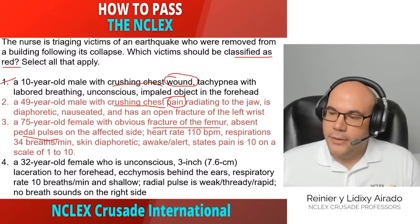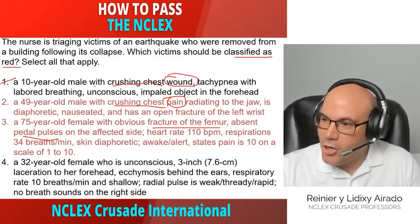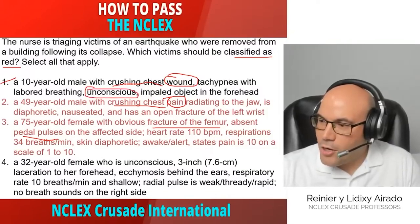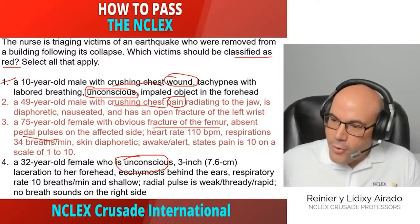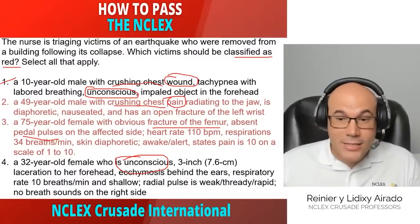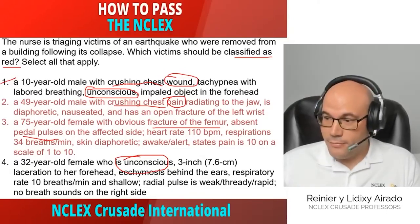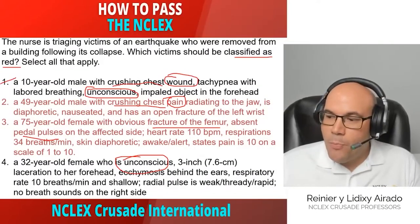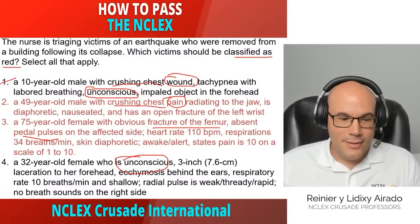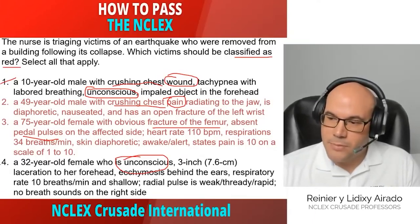Answer number four: a 32-year-old female who is unconscious — there is that word again. She has a three-inch laceration to the forehead, ecchymosis behind the ears — not good — a respiratory rate of 10, shallow breathing, rapid and weak thready pulse, and no breath sounds on the right side. This is a life-threatening condition but with a low chance of survival, so this will be black or expectant category.